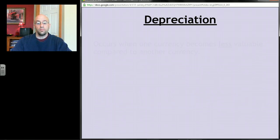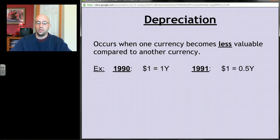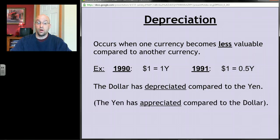Depreciation occurs when one currency becomes less valuable compared to another. For example, if in 1990 a dollar was equal to one yen and a year later you trade a dollar and only get half a yen, we'd say the dollar has depreciated compared to the yen. Alternatively, we'd say the yen has appreciated compared to the dollar.